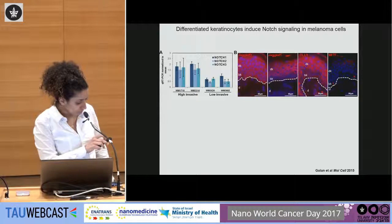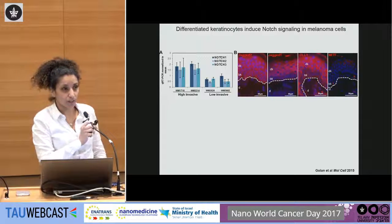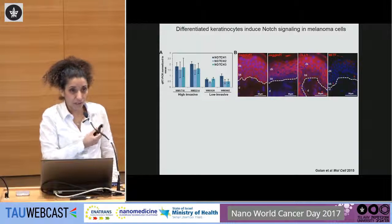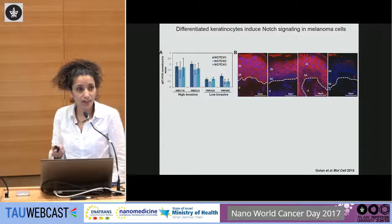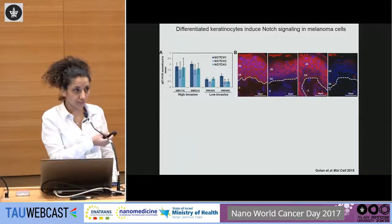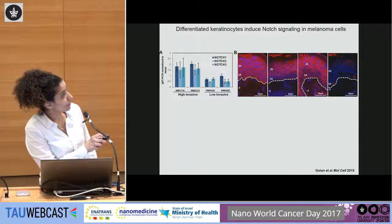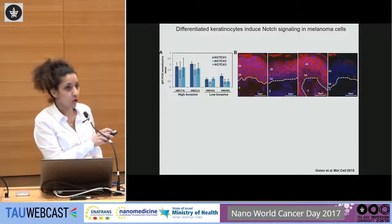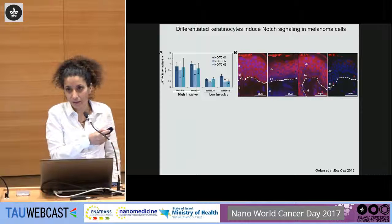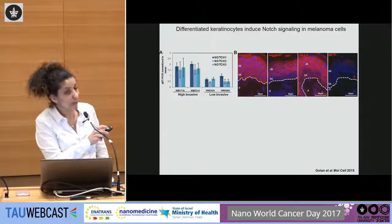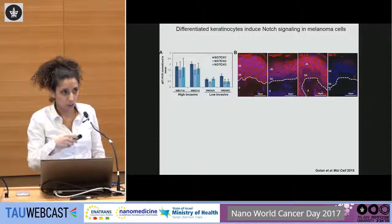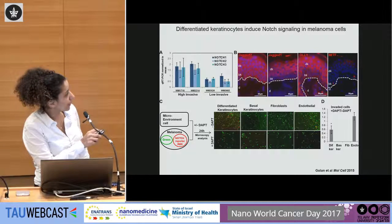We checked whether human melanoma cells actually express the receptor — yes, they do. And when you look at the microenvironment — at our skin — to see whether it expresses the ligand, we saw something striking. Different layers of the skin are characterized differently with the Notch ligand. The basal layer is clear — no Notch ligand — which means while cells are sitting at the basal layer, they will not be activated by Notch signaling. Only when cells start growing upwards toward the upper layer will they start receiving the ligand and expressing Notch signaling.